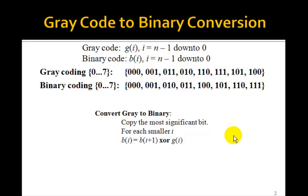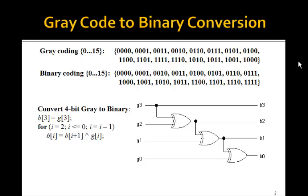You recall that we had this algorithm for converting a gray code to binary. Here's a 3-bit gray code to binary. We copy the most significant bit, and for each smaller one, B[i] was B[i+1] exclusive OR with G[i].